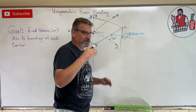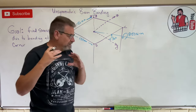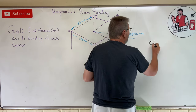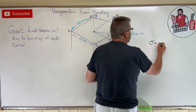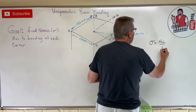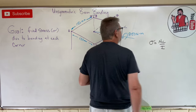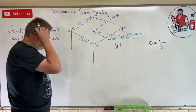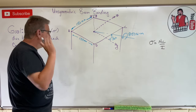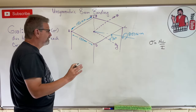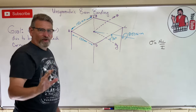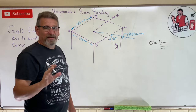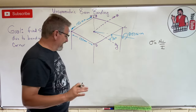Now, what does sigma stress from bending look like? That's the flexure formula — MC over I. Now, what's the hard thing here? There's a couple. Number one, we're talking about bending around a different axis here.